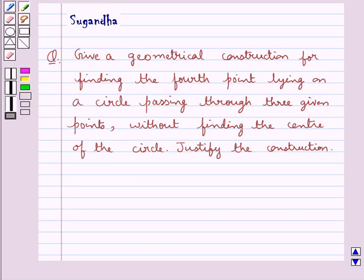Hello and welcome to the session. In this session we discuss the following question which says give a geometrical construction for finding the fourth point lying on a circle passing through three given points without finding the center of the circle. Justify the construction.